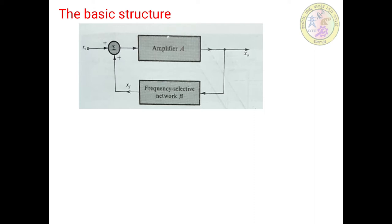In a feedback amplifier, a part of the output signal is fed back to the input through a feedback circuit. In this basic structure, X0 represents the output, Xf represents the feedback signal, and Xi represents the input. For later stages we will take Xi equal to 0.